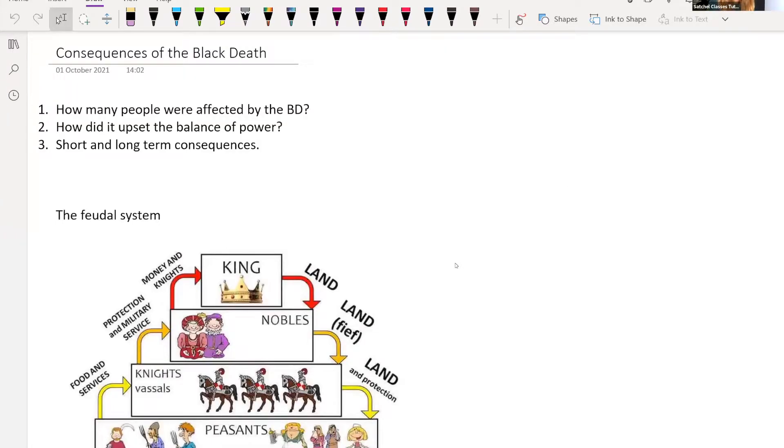Hi everyone, so today we're going to be looking at the consequences of the Black Death. We'll have a look at some short-term and long-term consequences. We're going to see how many people were affected by the Black Death, how it upset the balance of power in Europe and specifically England at the time, and the short and long-term consequences.